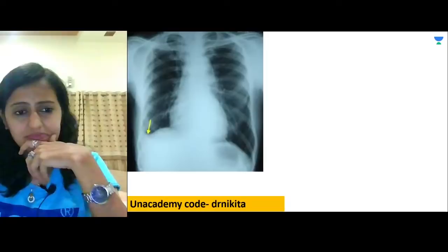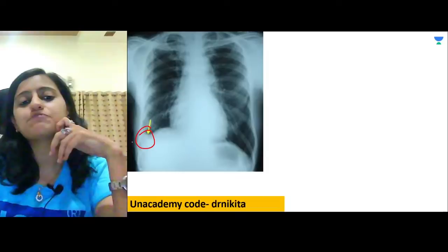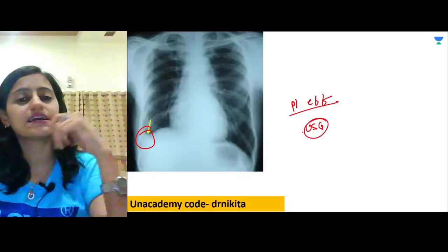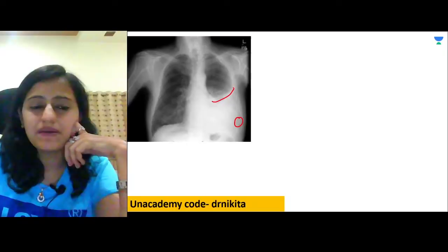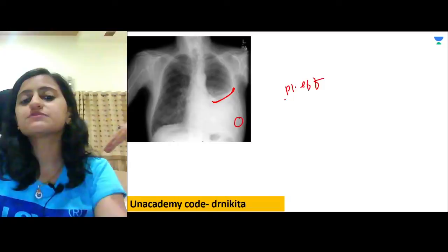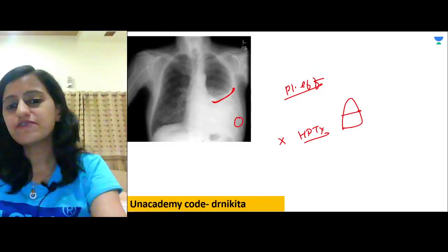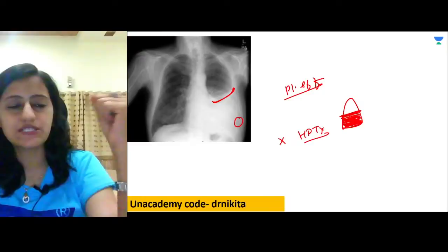Blunting of the costophrenic angle is pleural effusion — most sensitive investigation is ultrasound. The meniscus sign with the lateral part higher (non-horizontal level) is pleural effusion, not hydropneumothorax. Hydropneumothorax shows a horizontal air-fluid level.